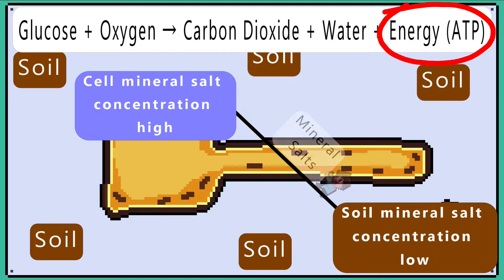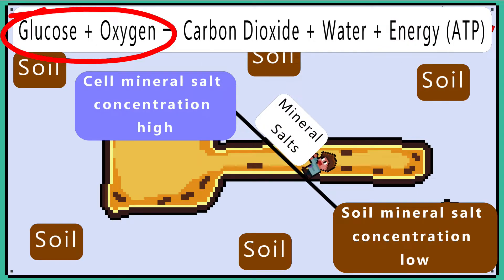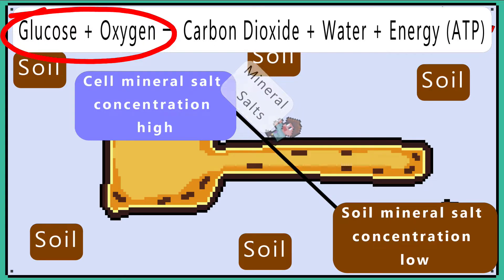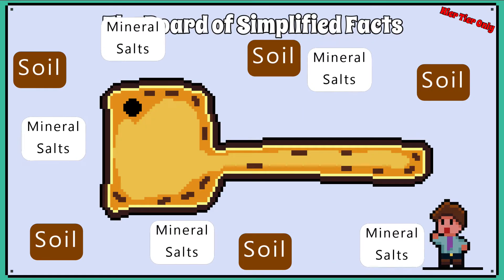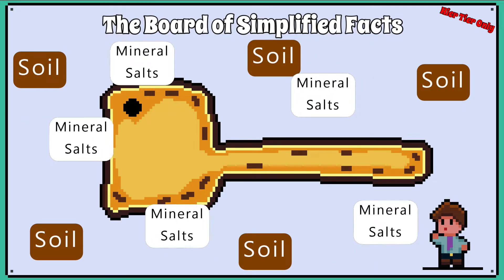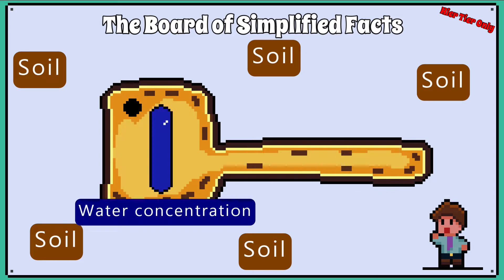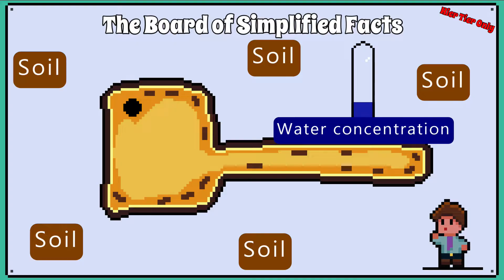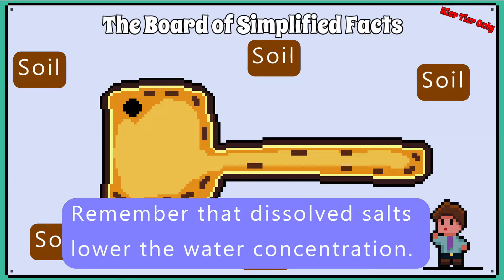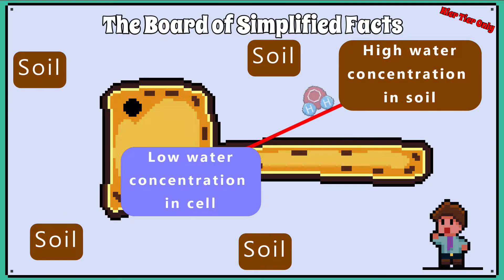This means the root hair cells need a good supply of glucose and oxygen for active transport. The purpose of moving mineral salts into the root hair cell is so that the water concentration drops inside the root hair cell and the water concentration in the soil surrounding the root hair cell increases. Remember that dissolved salts lower the water concentration.